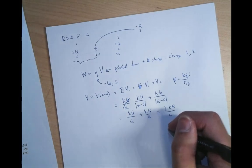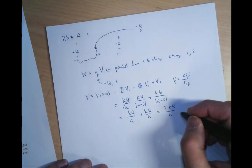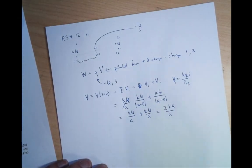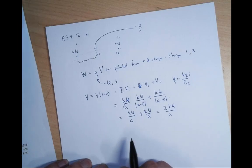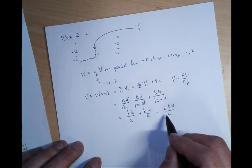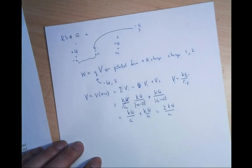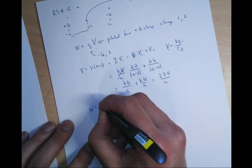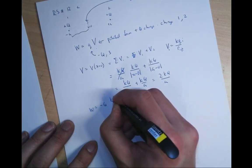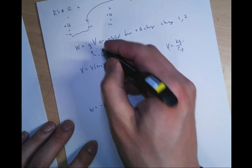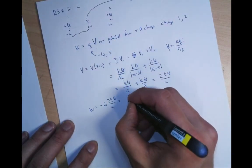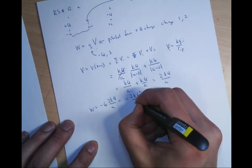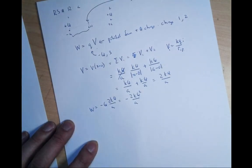Note: there's a mistake in the solution set — it had kq over 2a — but the new solution set will fix that. So the work equals minus q times 2kq over a, which gives minus 2kq² over a. That's very nice.